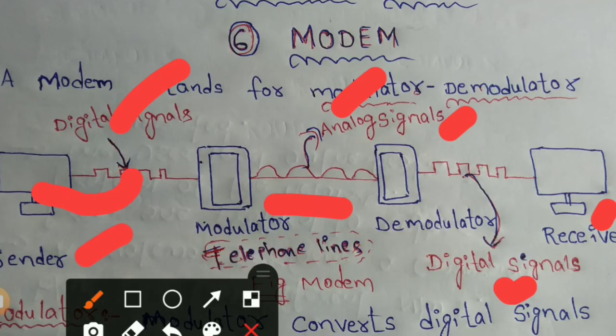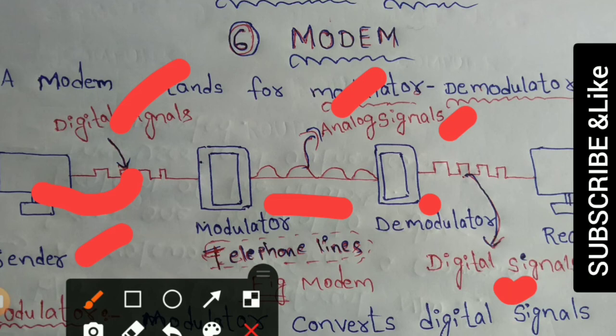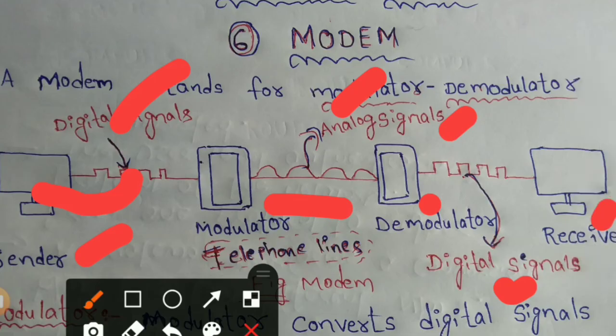On the receiver side, the Demodulator receives the analog signals from the telephone lines and converts them into digital signals, which is the format the computer system can understand.